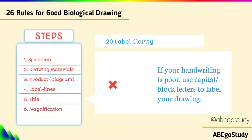Number twenty, label clarity: if your handwriting is poor, use capital or block letters to label your drawing. Just like in banking forms or official documents, writing in block letters inside a box makes each letter clear. This prevents confusion between similar letters like A and H, which could affect your result.